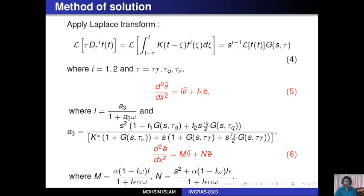In the method of solution, we apply Laplace transform to all the previous equations. Equation 4 gives the Laplace transform of memory-dependent derivative, and K(t - xi) is the kernel function; we can choose this kernel function freely according to our purpose. After some manipulation and calculations, we will arrive at equation number 5 and 6, which are second-order differential equations on theta_bar and e_bar (bar represents the Laplace transform), where L is given by a3/(1 + a3*omega). This expression a3 is very important because it has some results on the numerical values. Also equation number 6, where M and N are given by this form - these are after the manipulation and simplification.